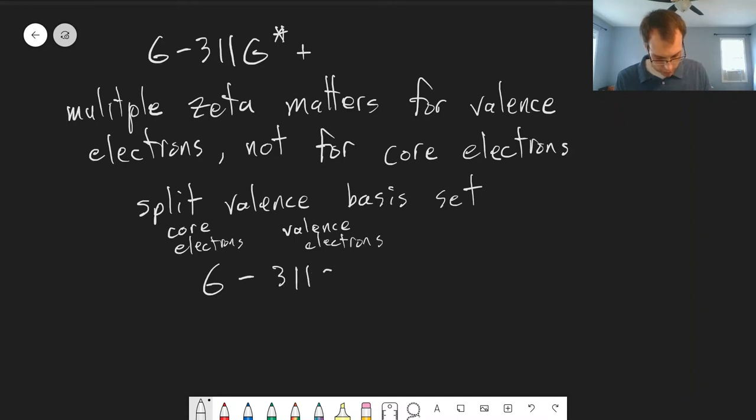So it's 311g star plus. The numbers here tell us how many Gaussian functions are we using to represent our Slater-type orbitals. So the 6 here means that our core electrons are represented by a Slater-type orbital composed of 6 Gaussian functions. And this is pretty standard for the core electrons, that we approach them this way. All right, so the core electrons are the inner shell electrons.